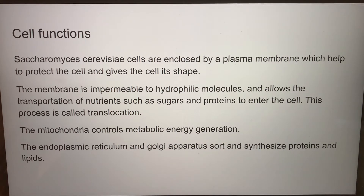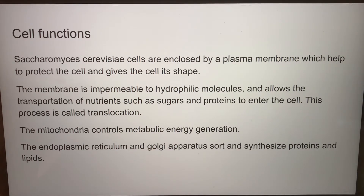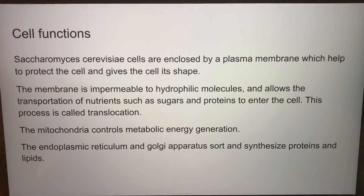Saccharomyces cerevisiae cells are enclosed by a plasma membrane, which helps to protect the cell and gives it its shape. The membrane is impermeable to hydrophilic molecules and allows the transportation of nutrients such as sugars and proteins to enter the cell — a process called translocation. The mitochondria controls metabolic energy generation. The endoplasmic reticulum and Golgi apparatus sort and synthesize proteins and lipids, just like many other cells, including those in our own body.